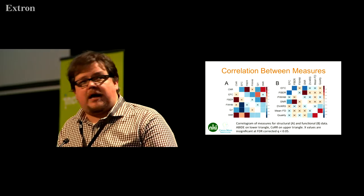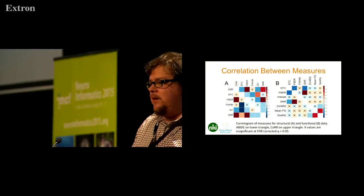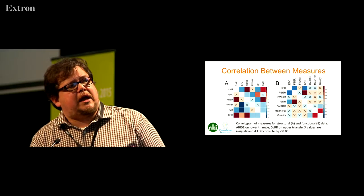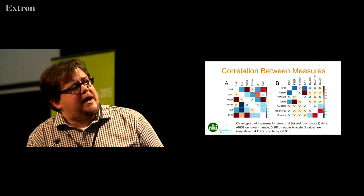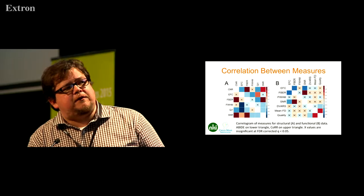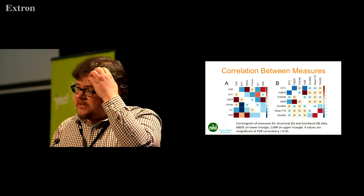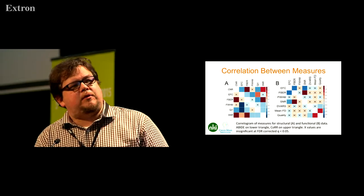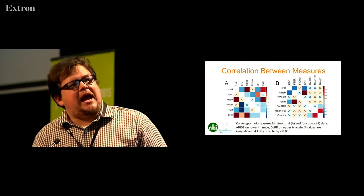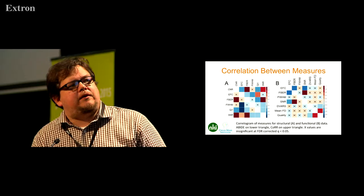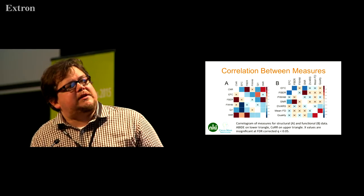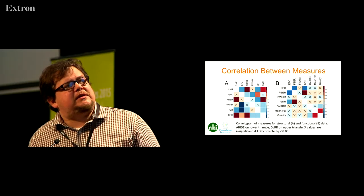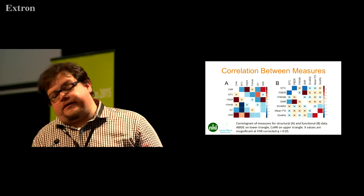We've done comparisons to learn how these different measures work. Because a lot of them are highly correlated, we looked at correlograms showing measures for anatomical and functional data — CoRR on the top triangle and ABIDE on the bottom. Values marked with an X are not significant; others are significant at FDR-corrected p=0.05. For the temporal measures, the correlations are very consistent. But for some anatomical measures, the correlations actually switch between datasets — some are quite negative in one and positive in the other — and we're trying to figure that out.